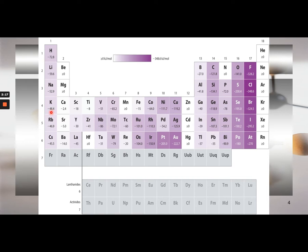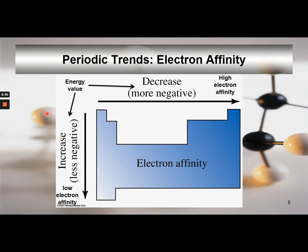More positive values indicate low affinity — for example, negative 48 is more positive than negative 324. A more positive value means it takes more energy to add an electron and indicates low affinity. To put it simply: the more negative the value, the higher the electron affinity; the more positive the value, the lower the electron affinity.